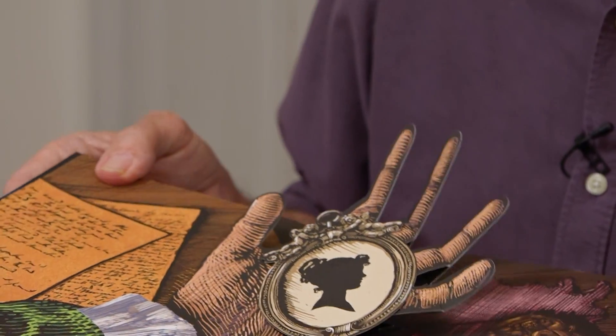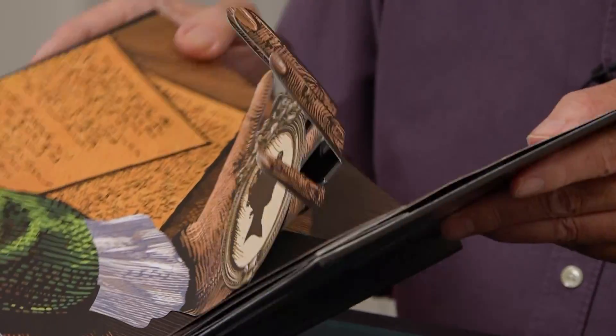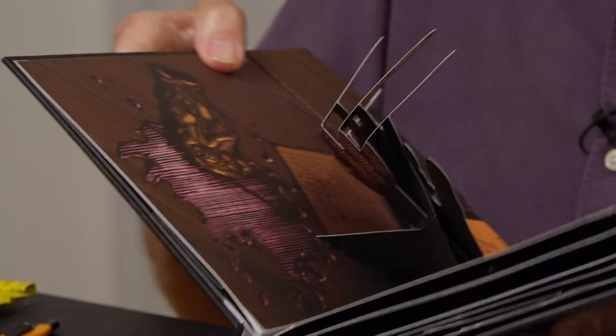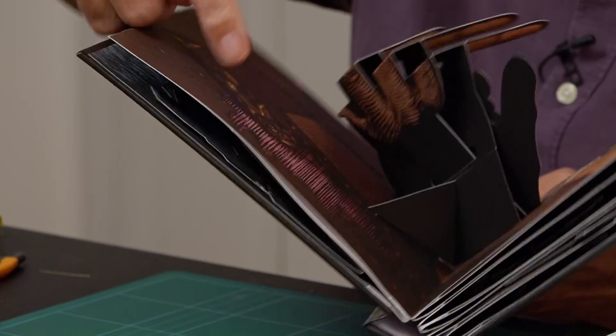This is the unfurling mechanism. I think the best way to understand it is to look at it from behind. You'll see that the whole thing is powered by a V-fold in here.